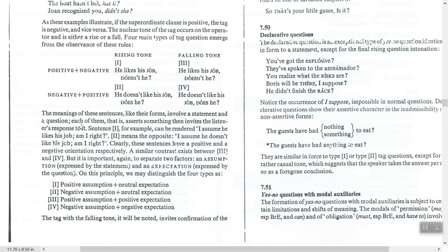The meaning of these sentences, like their form, involves a statement and a question — each asserts something then invites the listener's response. In Arabic rendering, for example: number one means 'He likes his job — I assume — am I right?' and number two, with negative orientation, means 'He doesn't like his job — I assume — am I right?' These sentences have positive and negative orientation respectively.